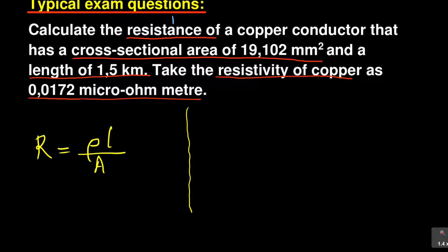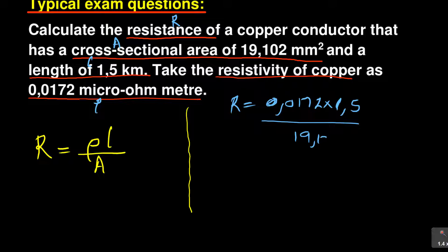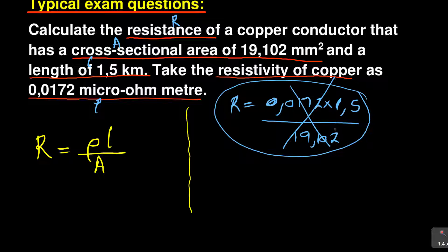Let me show you how tempting it is to just apply the formula directly. You have resistance R, cross-sectional area A, length L, and resistivity rho. So you might think: R equals 0.0172 times 1.5 divided by 19,102. But why is this wrong? It is wrong because of the units. The area is in millimeters squared, the length is in kilometers, and the resistivity is in micro-ohm-meters.